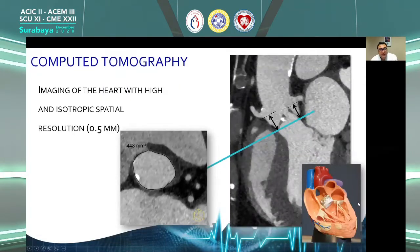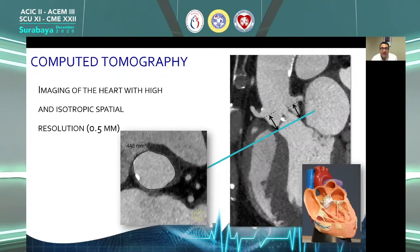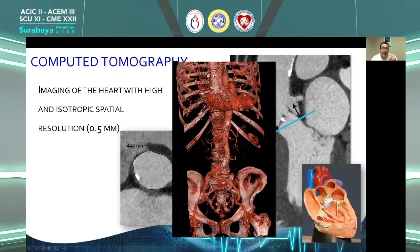Within the context of TAVI or TAVR, the use of CT is an established modality that is very crucial for procedural planning and outcome. We look at the aortic root anatomy, dimensions, size the annulus, look at neighboring coronaries for potential obstruction of the ostia, and of course look at access information. CT fits quite well here because of the rapidity of acquisition with modern CT technology to decide whether a transfemoral or non-transfemoral access should be performed.